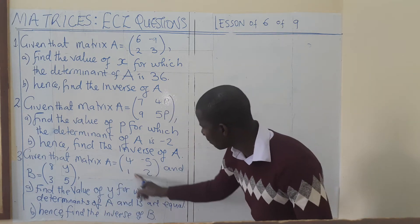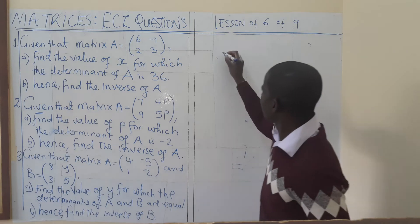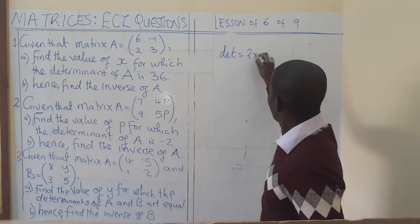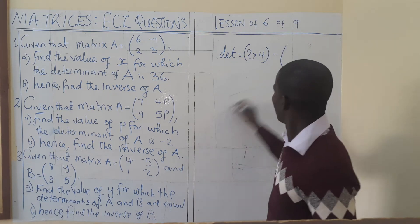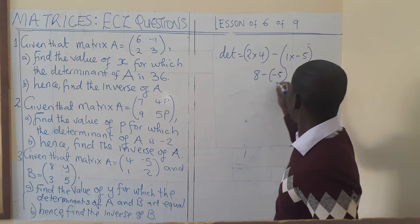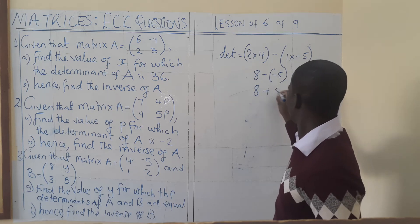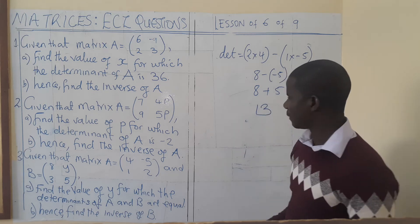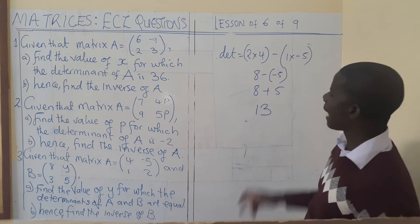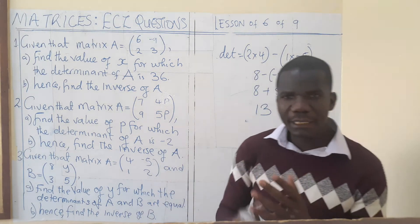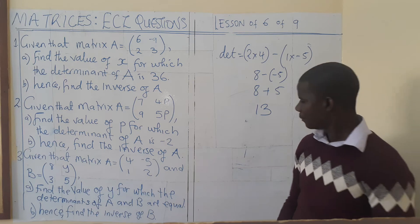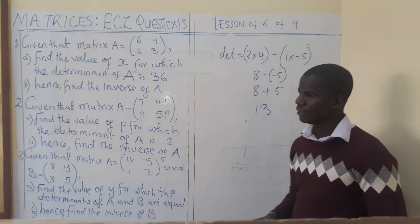The determinant of matrix A is 2 multiplied by 4 minus 1 multiplied by negative 5. This gives us 8 minus negative 5, which equals 8 plus 5, giving us 13. Since both matrices have the same determinant, the determinant of B is also 13.